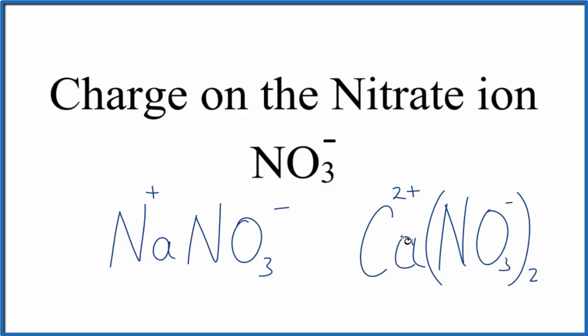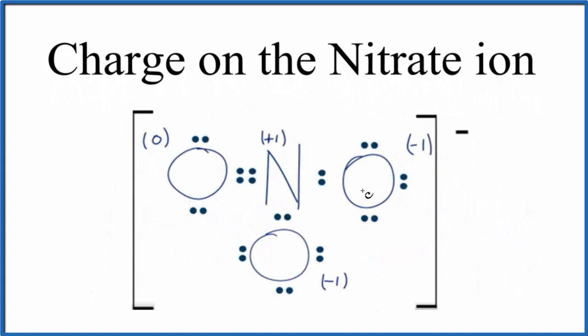The other way is to look at formal charge. So here's a Lewis structure for the nitrate ion, and we have formal charge written in.